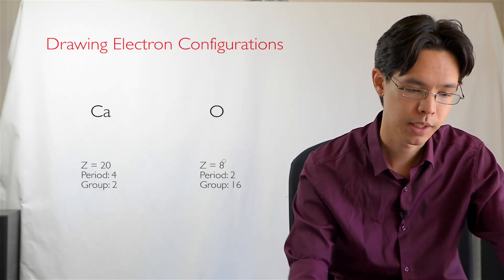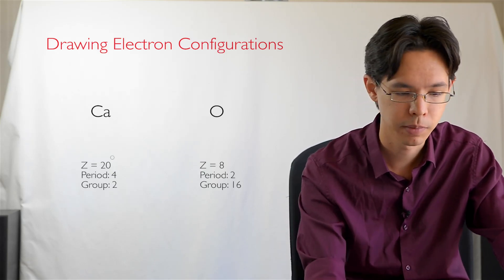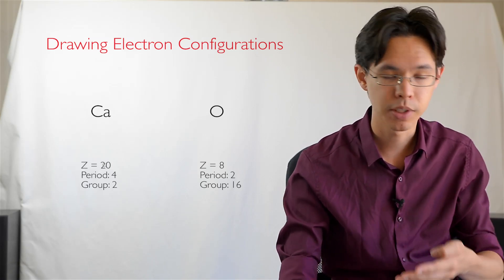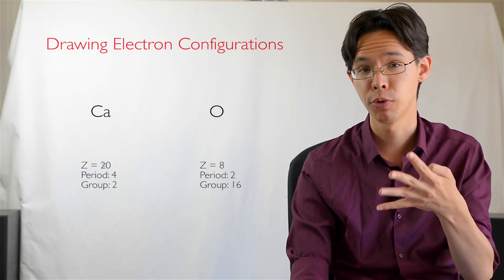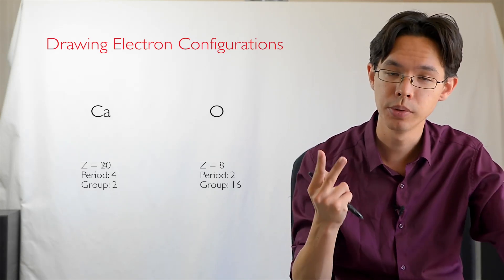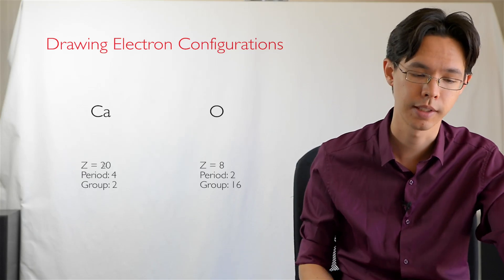I've also got another example here with calcium, and you can see the similar information there. Atomic number 20, therefore 20 electrons as well. The period number is four, so we would expect to have four electron shells. And we've got group 2, so therefore two electrons in its outermost shell.